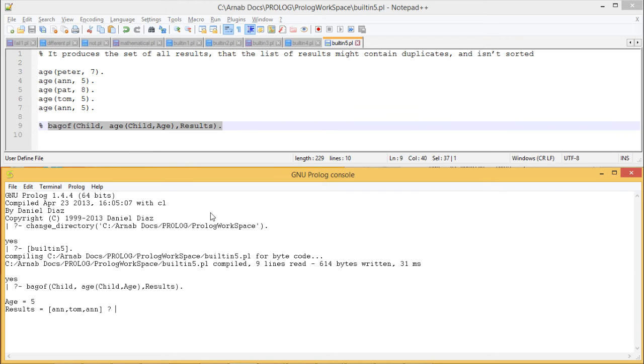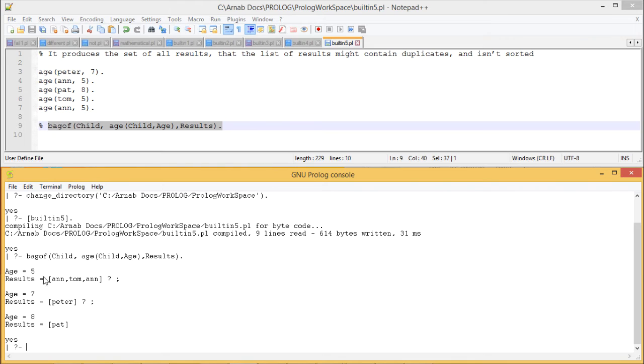Here you see we are getting these outputs and with the age 5 we are having Ann, Tom and Ann. We can easily find that Ann has got replicated twice and Ann, Tom and Ann they are not at all in the sorted form. And this age 7 with the name Peter and age is equal to 8 with the name Pat, accordingly the outputs have got obtained. In this query if I just replace this bagof by setof, if we replace this bagof by setof you can find this one.